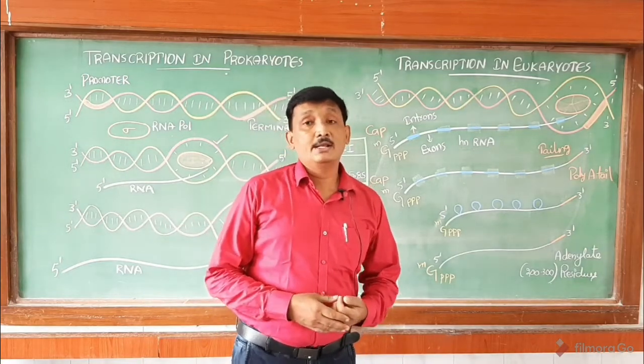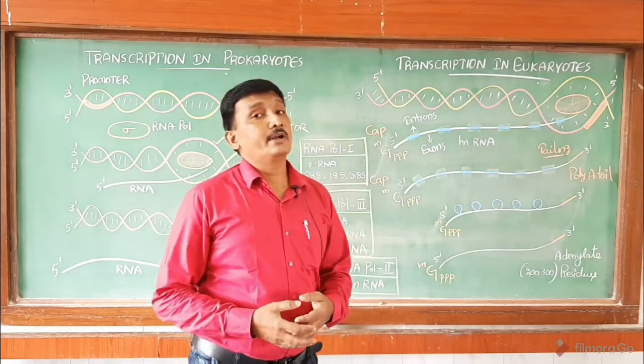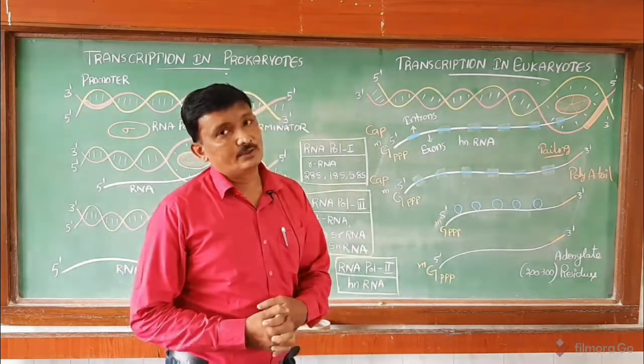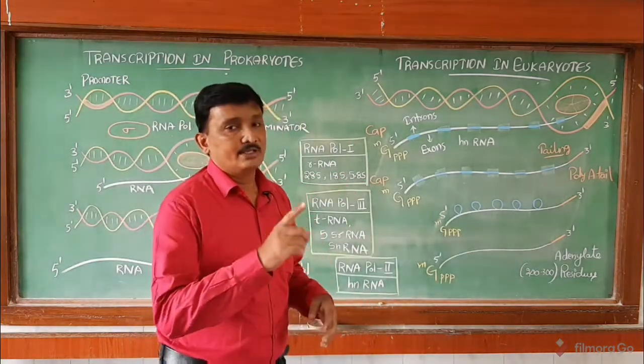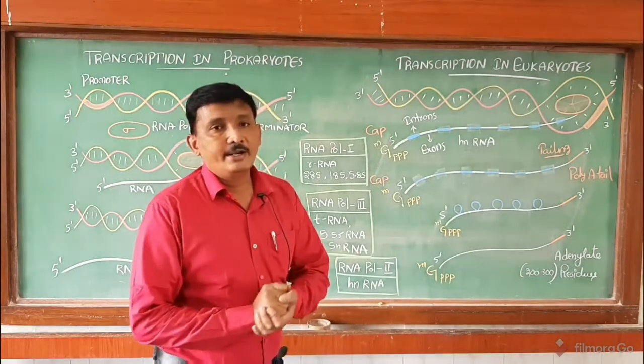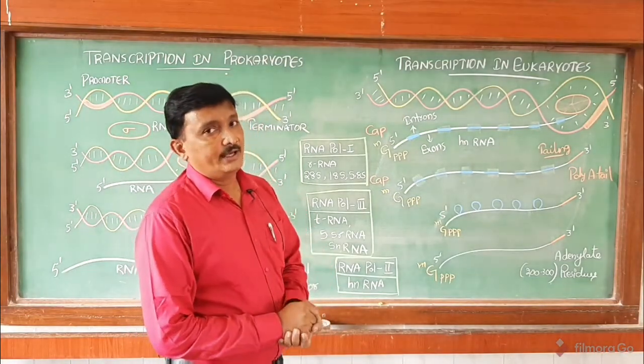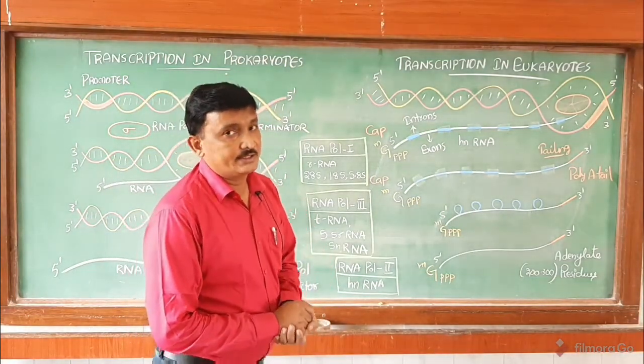But in eukaryotes, there are three types of RNA polymerases. Those are RNA polymerase 1, RNA polymerase 3, and RNA polymerase 2.